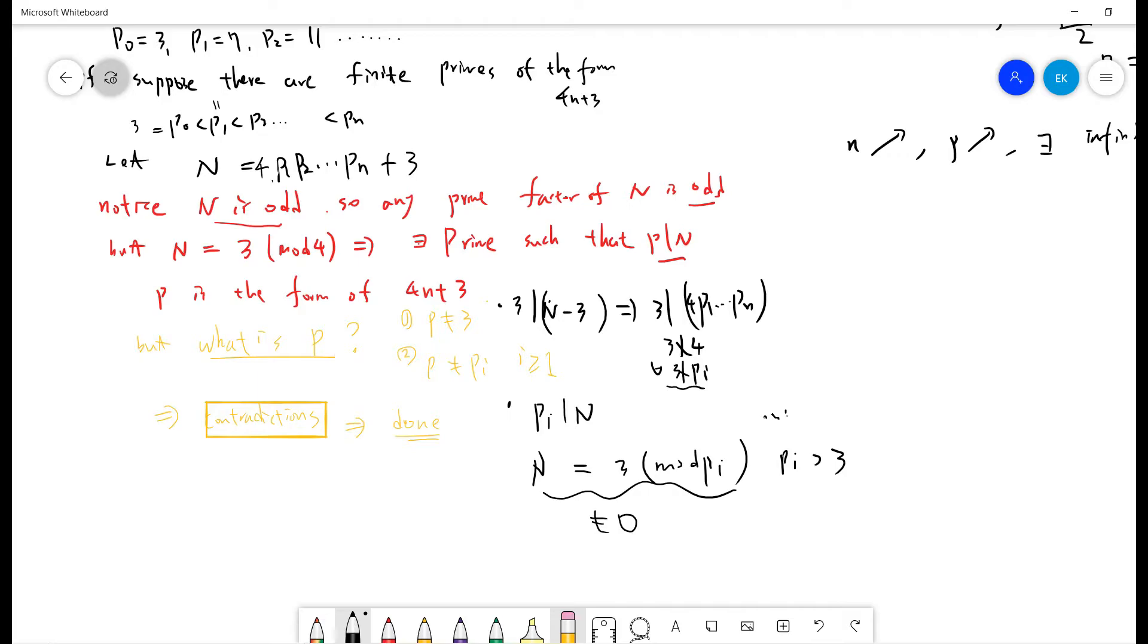But this is a contradiction, because we already said that we only have finite primes of 4n plus 3. But now, N has a prime factor with 4n plus 3, but it's not on the list. So contradiction, so we are done. There are infinite primes of 4n plus 3.